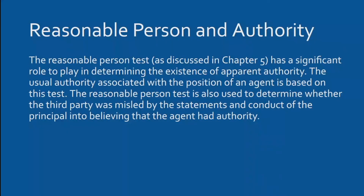There's also the reasonable person test that applies to authority. If any reasonable person looking at the contract would say it covers trucks as well as cars because it's really vehicle insurance, the company can't deny it. The reasonable person test is also used to determine whether a third party was misled by statements or conduct of the principal into believing the agent had authority.